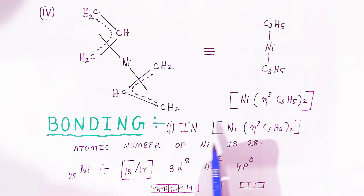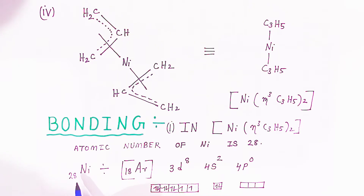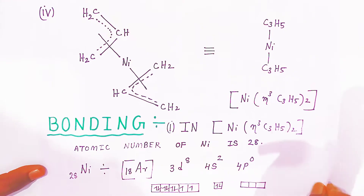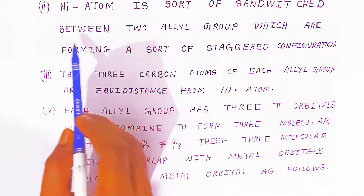When talking about the bonding in the nickel complex, the atomic number of nickel is 28. The ground state electronic configuration is: argon (18), 3d⁸, 4s², 4p⁰. For 3d⁸, the eight electrons fill singly first, then pairing takes place. 4p has no electrons, so all those orbitals are vacant. This means nickel has two unpaired electrons in its ground state.